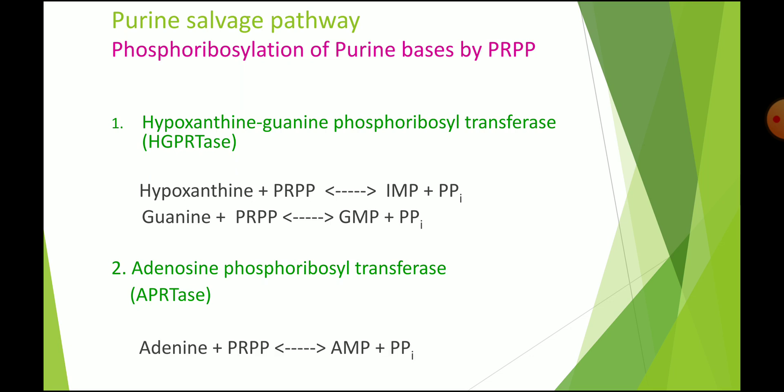So these two enzymes are of importance in the salvage pathway. First is hypoxanthine-guanine phosphoribosyl transferase, which transfers ribose phosphate from PRPP to hypoxanthine or guanine to form IMP or GMP. Then adenine phosphoribosyl transferase catalyzes the transfer of ribose phosphate from PRPP to adenine to form adenosine monophosphate (AMP).